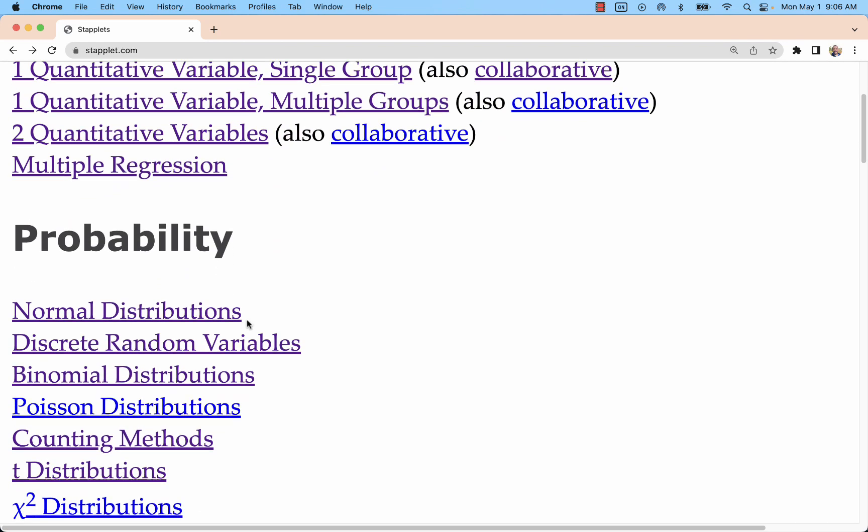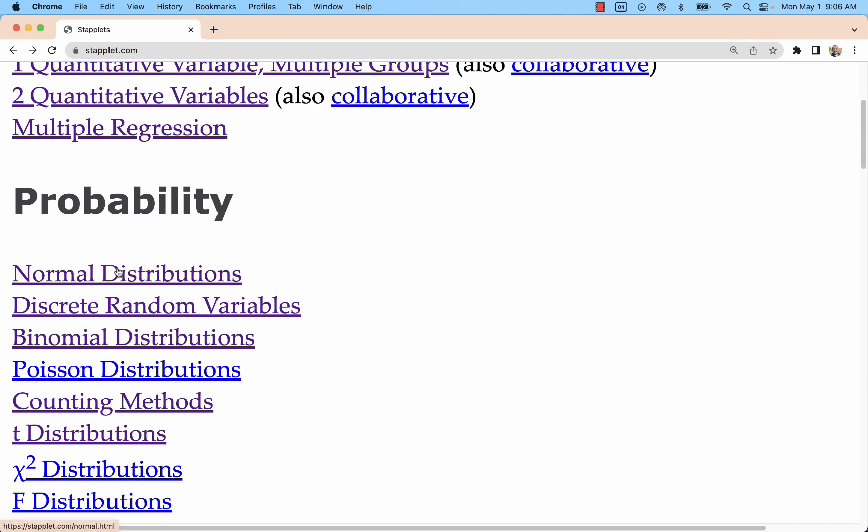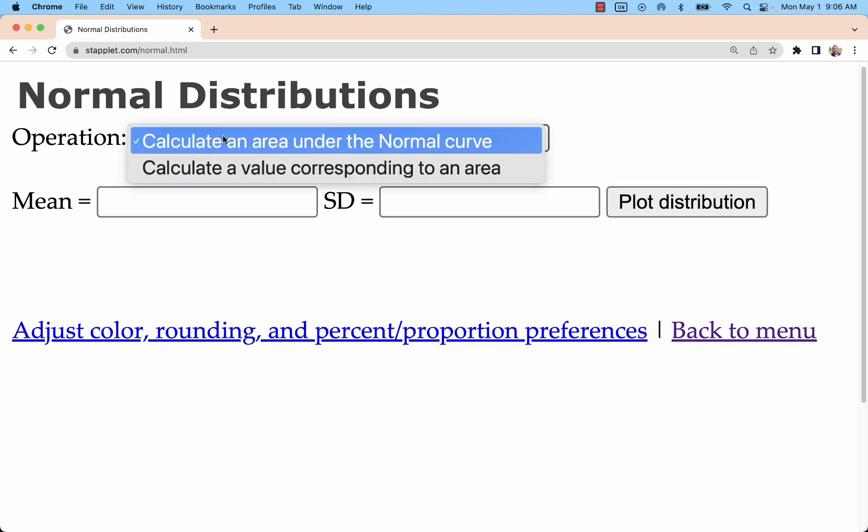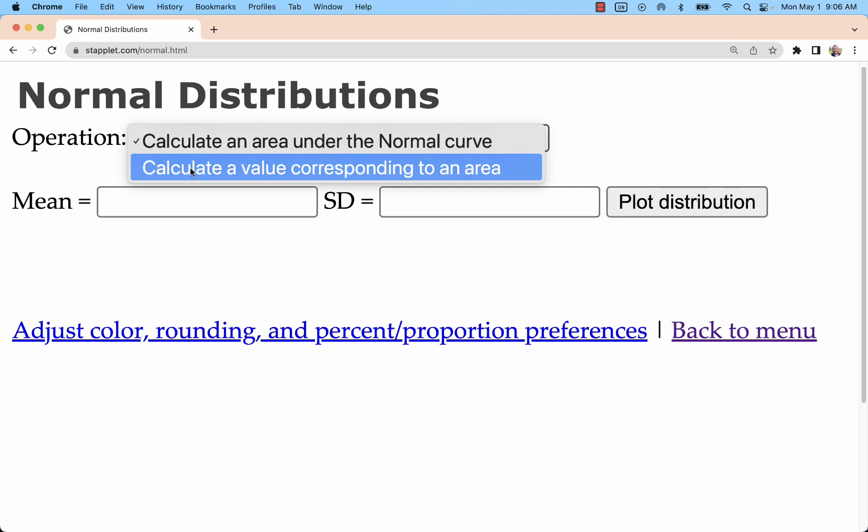Staplet.com has a great feature for normal distributions. With this applet we can do two different operations: we can calculate the area under the curve that would define a probability or percentage of the curve, or we can use a probability, use an area, and find a value.